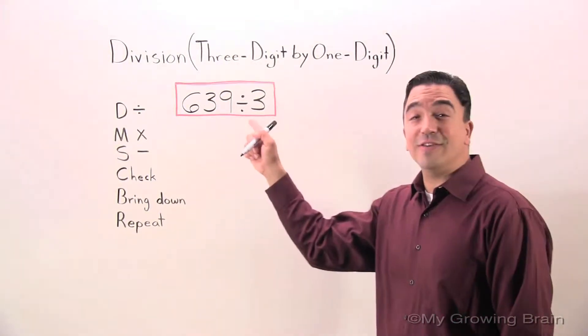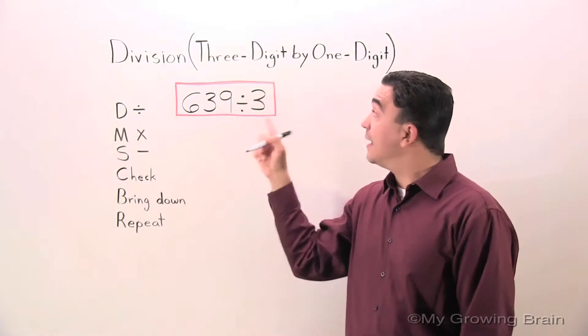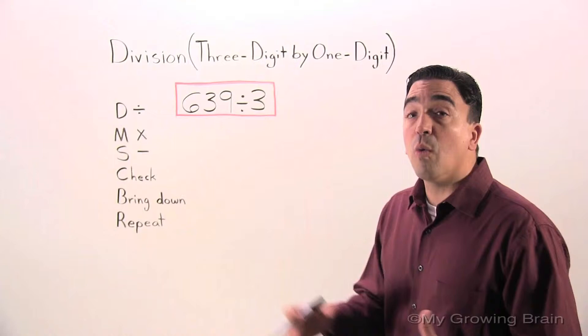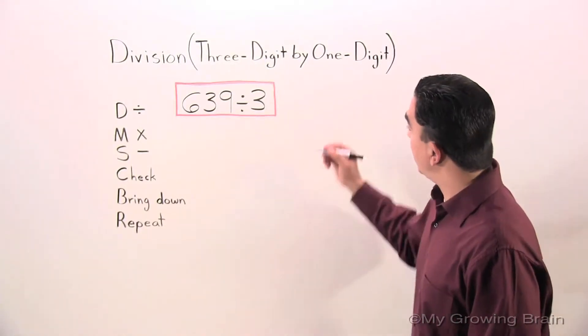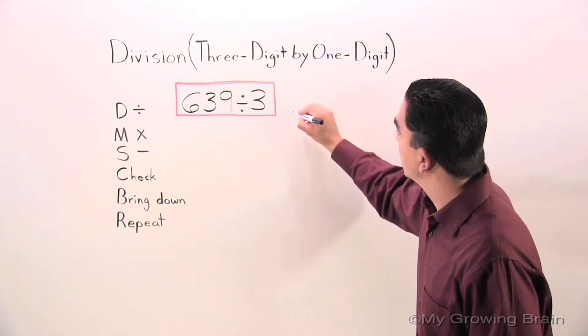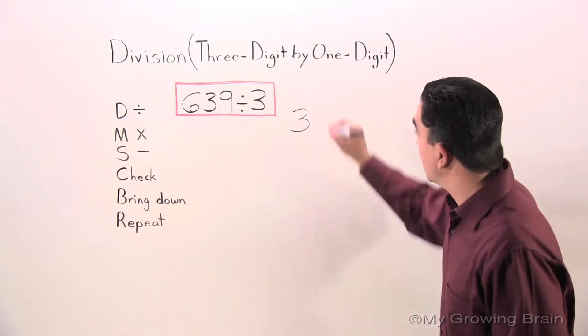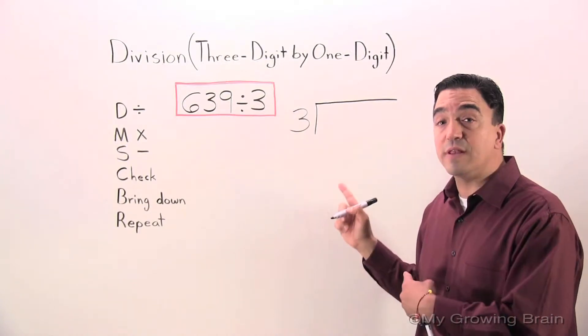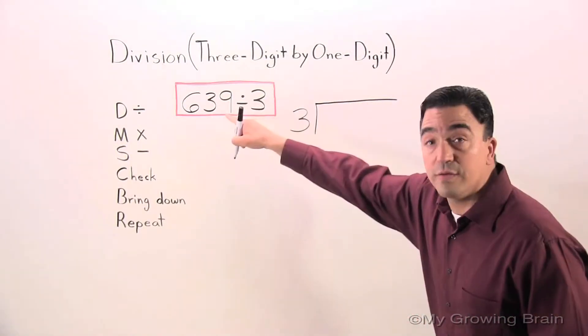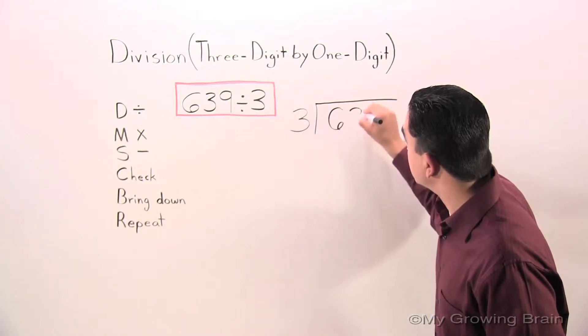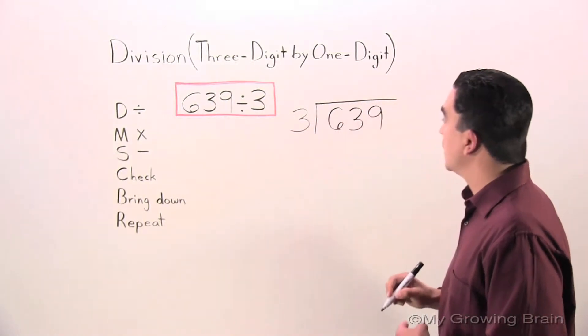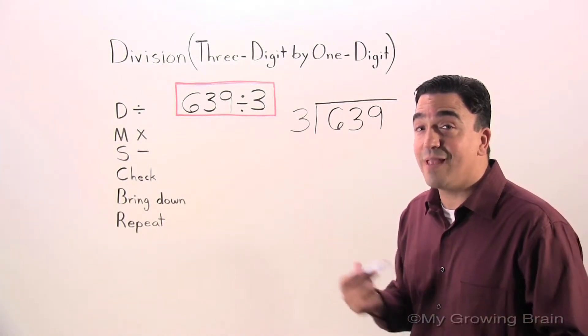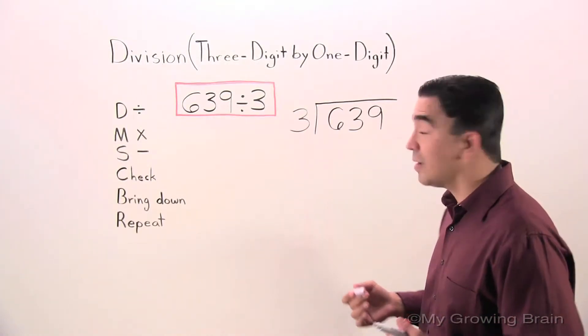Alright, as you can see on the board, I have 639 divided by 3. I'm going to change this to make it into more of a workable format. So I'm going to start by putting the divisor, 3, right there. I'm going to make a bracket, and inside my bracket I'm going to put the dividend of 639. Before we get started though, I'm going to separate my digits so I keep this nice and organized.